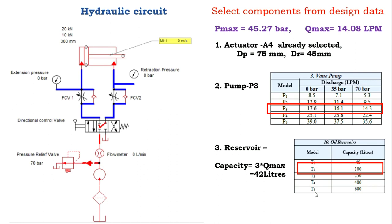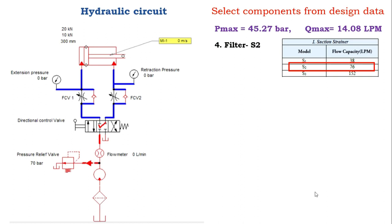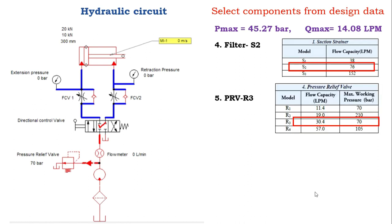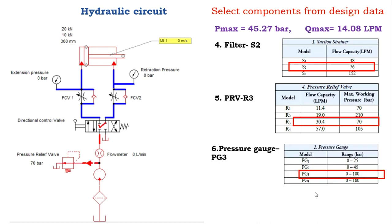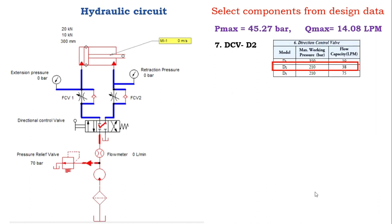The next component is the filter. Select filter H2 based on the maximum flow rate. Next, select the pressure relief valve based on pressure and flow rate. After that, select the pressure gauge, then the direction control valve — with selection criteria being pressure and flow rate — followed by the flow control valve and check valve.